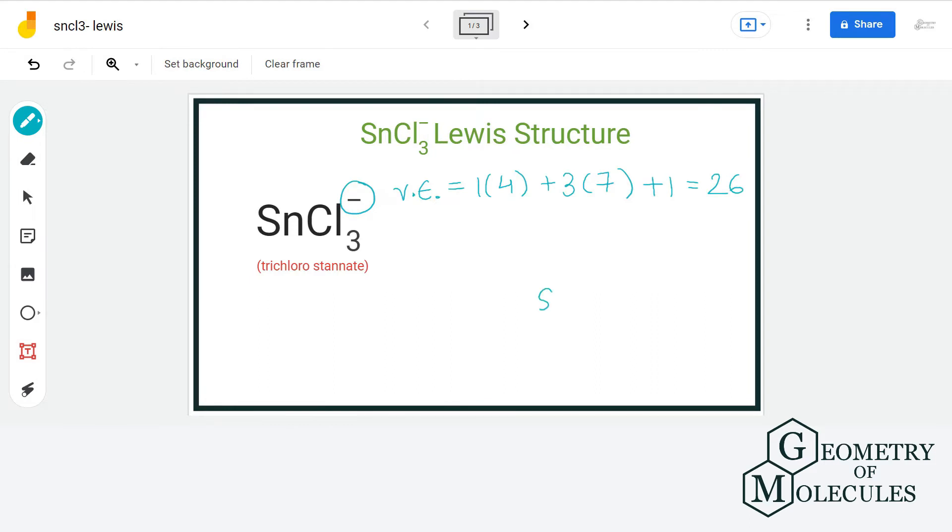For the arrangement of atoms, we will place tin in the center and arrange chlorine atoms around it. Then we will place electron pairs in between each atom for bond formation.